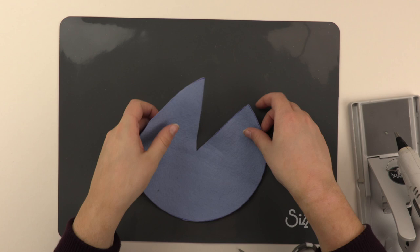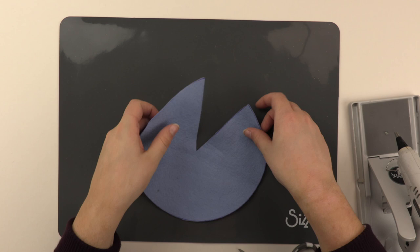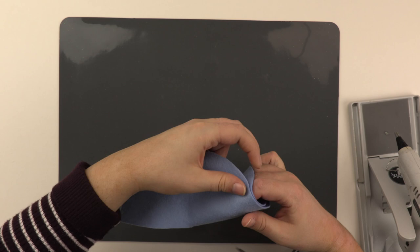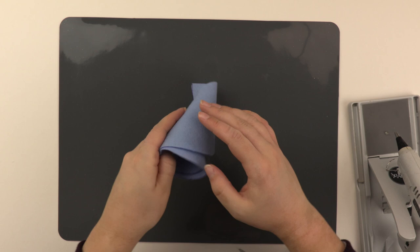So with this, I want to create a cone shape. So I'm just going to carefully wrap around and keep wrapping until it starts to fold like this. And then I'm just going to take my scissors and cut down here.